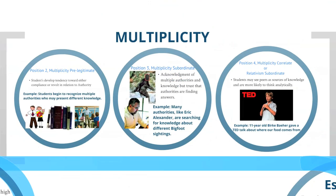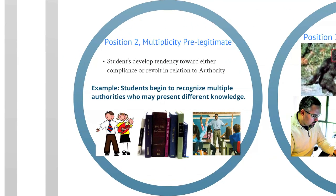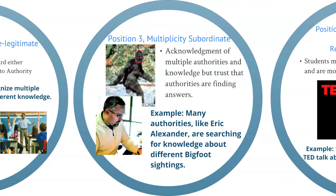The next position is multiplicity. Position two, multiplicity prelegitimate, is when students begin to recognize multiple authorities who may present different knowledge. Position three, multiplicity subordinate, is when authorities like Eric Alexander are searching for knowledge about different Bigfoot sightings.